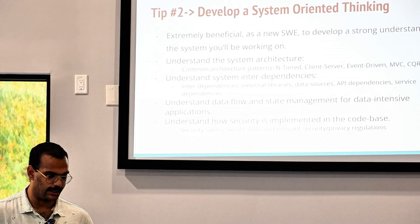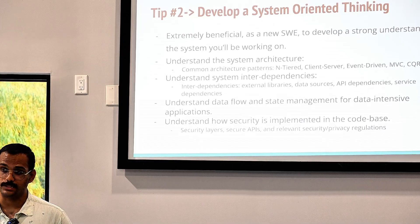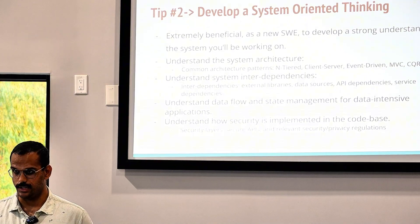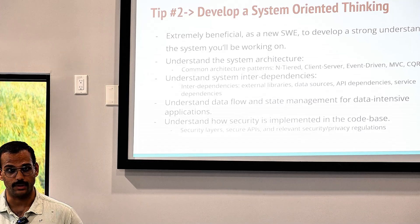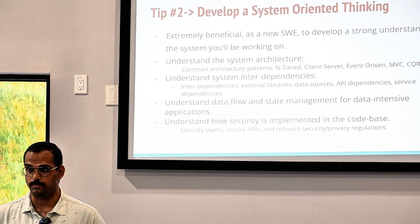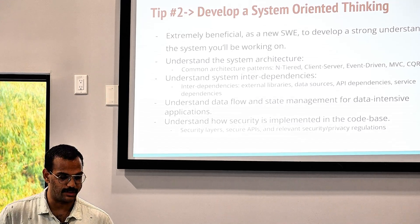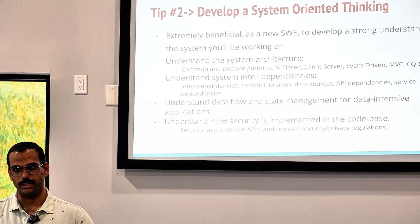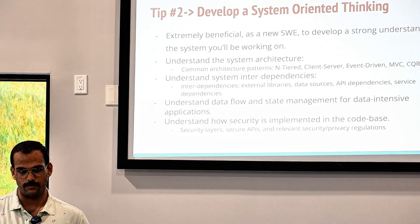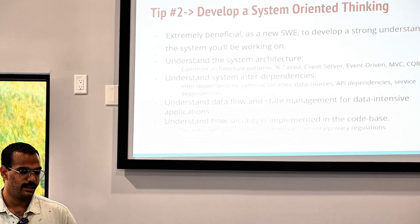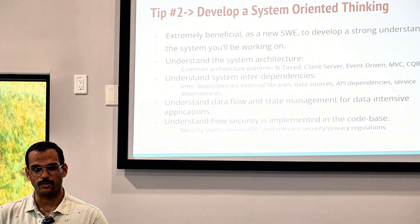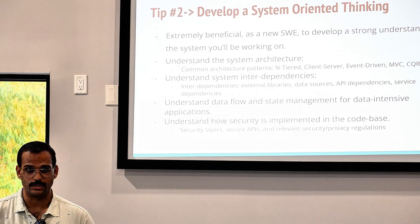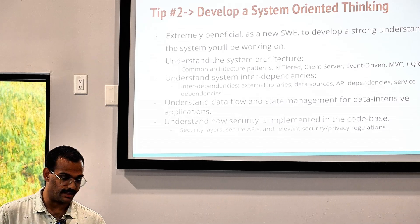The next thing you want to understand is system interdependencies. You have different tiers within your architecture that all communicate with each other and depend on each other in various ways. You want to understand how making a change to one tier affects another. Besides logical interdependencies, there are also external libraries, data sources, API dependencies, and service dependencies.